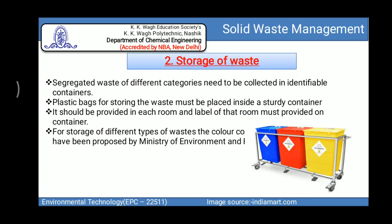Regarding storage of waste — segregated waste of different categories needs to be collected in identifiable containers. Sharps need special attention as they contain pathogens; they should be deactivated before placing into the container and always disposed in a puncture-proof container to avoid direct contact. Plastic bags for storing waste must be placed inside a sturdy container, and a lid should be provided to avoid direct contact with the atmosphere. Every room in a hospital should have containers for various types of waste so waste can be easily segregated, and each container should be clearly labelled.